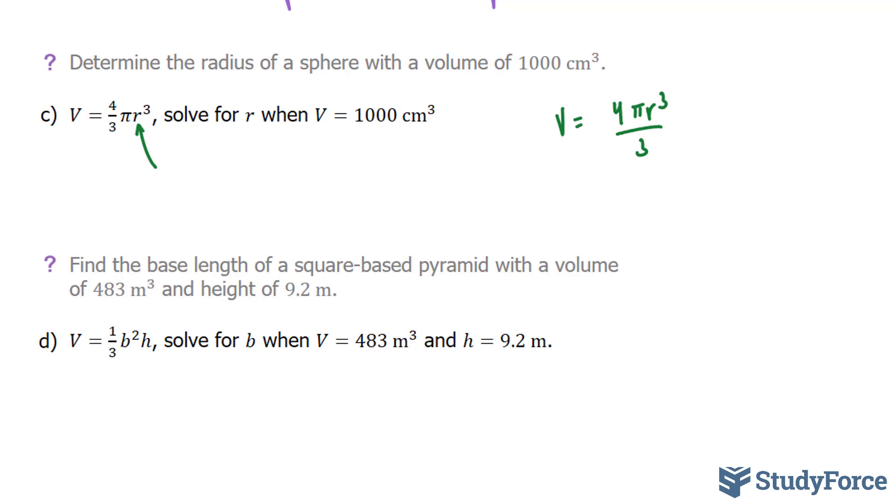Now we know that when you have to solve an equation containing a fraction, you always have to get rid of that fraction somehow. Now to get rid of this 3, you have to multiply both sides by 3. And if you multiply this side by 3, notice what will happen. The 3 will cancel out. And you're left with 3V is equal to 4 pi R cubed.